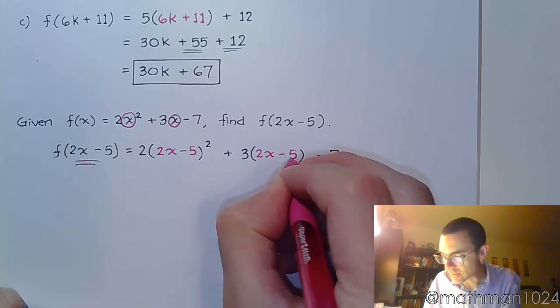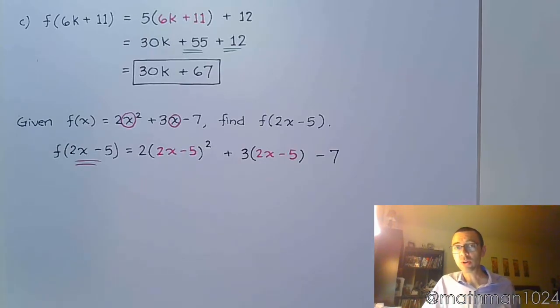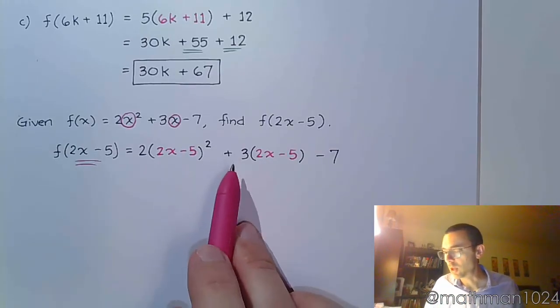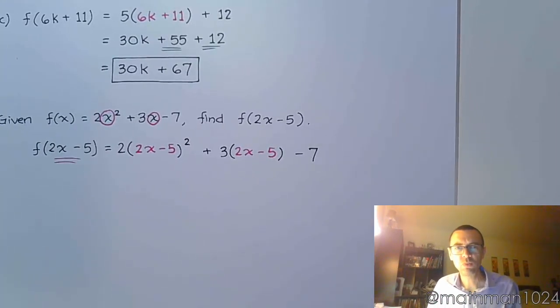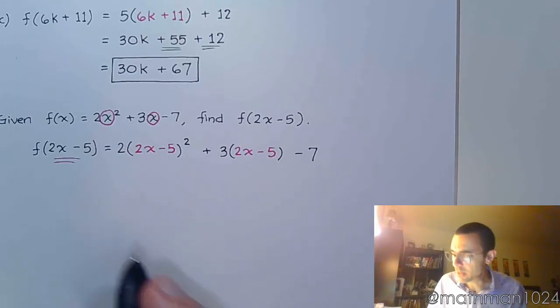Notice that I'm just replacing the x. I'm not doing anything else with the square. The square doesn't go away. The coefficients of 3 and 2, they don't go away. I'm just replacing x with parentheses and I'm plugging in the 2x minus 5 inside there. Well, now we have an algebraic expression to figure out, just to multiply it out.